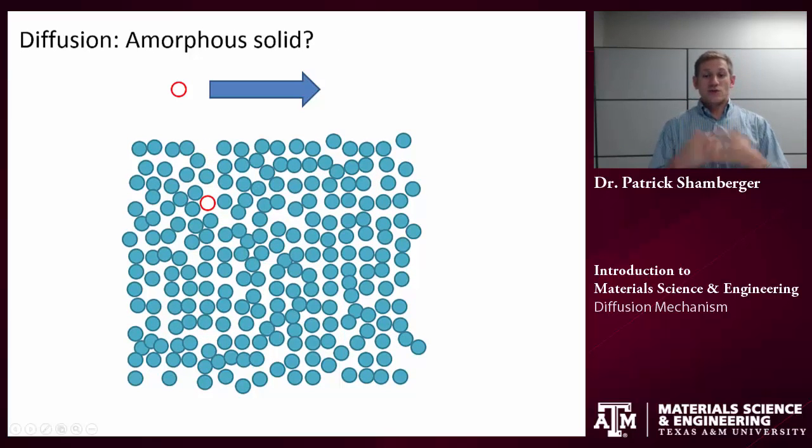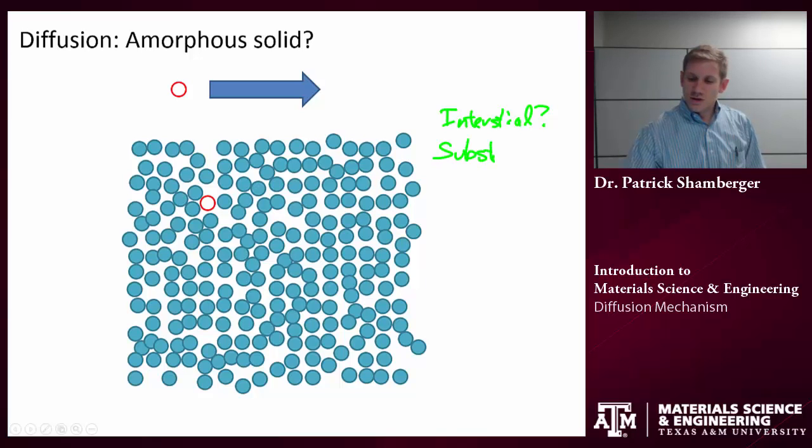We talked about crystalline solids. What about an amorphous solid? Can I have interstitial or substitutional diffusion in an amorphous solid? And the answer is no, because in an amorphous solid there's no crystal lattice.